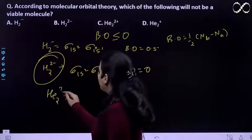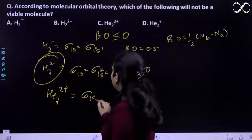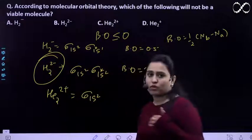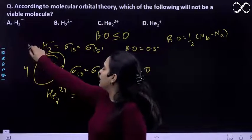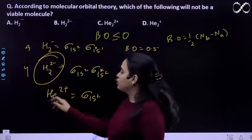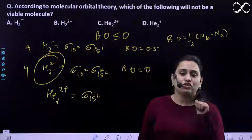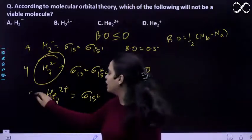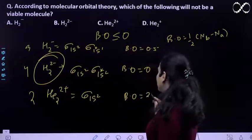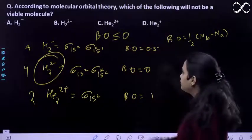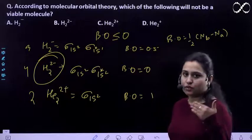Let's see H2 2 positive. It will be sigma 1s is 2 because total number of electrons are 4. Yehan pe total number of electrons are 4. Yehan total number of electrons are 3. H2 2 positive, H2 mein 4 electrons hoon gae, 2 positive hai toh 2 electrons aapne hatane hai. 2 electrons aapke sigma mein pahunch gae, toh bond order hoon gae yehan pe 1. Bond order is 1 here.